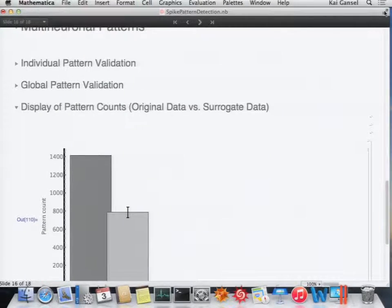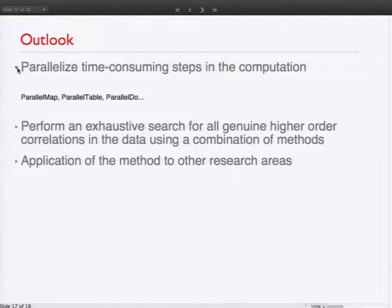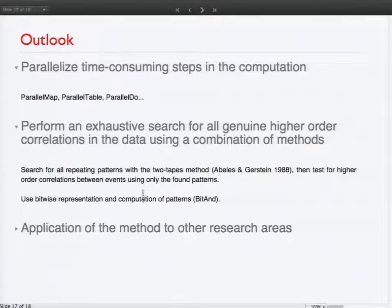And I just want to give you a brief outlook how we could improve this. Of course, very easy to do and I actually did this already. One could parallelize the time-consuming steps in the computation with the parallel commands like parallel map, parallel table, parallel do. This is very conveniently done in Mathematica. It was no problem at all. When I tried this at first, it immediately worked. And, of course, to make the performance of the whole testing better, one should do at some point an exhaustive search for all genuine higher autocorrelations in the data using a combination of methods. The first idea would be to search for all repeating patterns with another method, the two-tapes method that was published in 1988 by Abeles and Gerstein. And then test for autocorrelations between events using only these found patterns that actually do repeat. Otherwise, we have this combinatorial explosion problem and this alleviates this a bit.